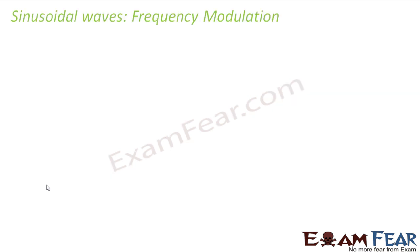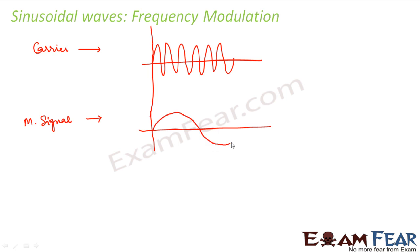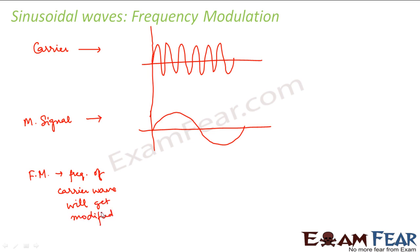Now let us look at frequency modulation and how it happens. We follow the same process — we need a carrier wave, which is a high frequency sinusoidal wave, and we need a message signal. In frequency modulation, the frequency of the carrier wave gets modified, which means the amplitude of the carrier wave will remain the same.